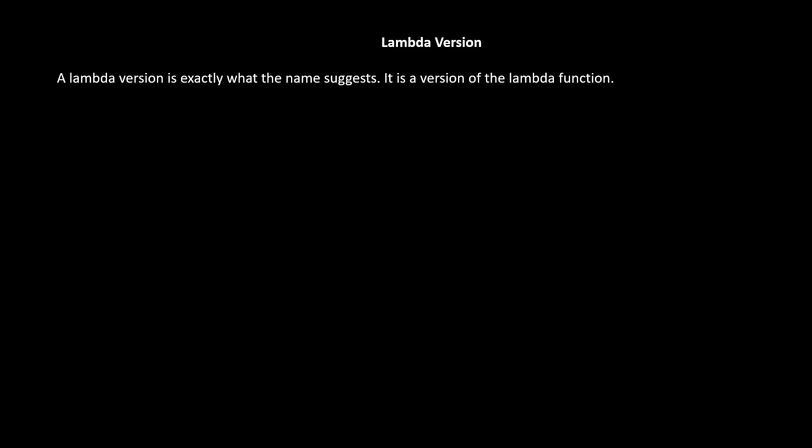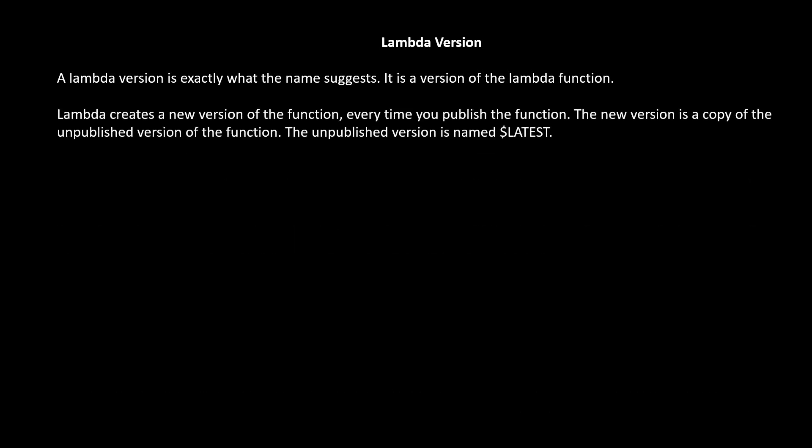So first of all, what is a Lambda version? A Lambda version is exactly what the name suggests — it is a version of the Lambda function. Lambda creates a new version of the function every time you publish the function. The new version is a copy of the unpublished version of the function. The unpublished version is named $LATEST.